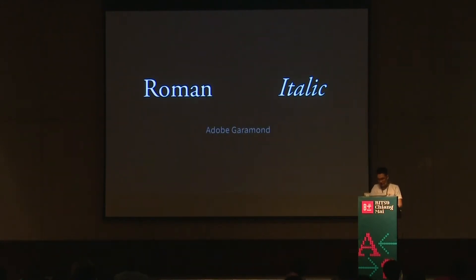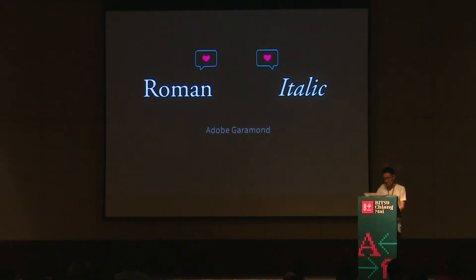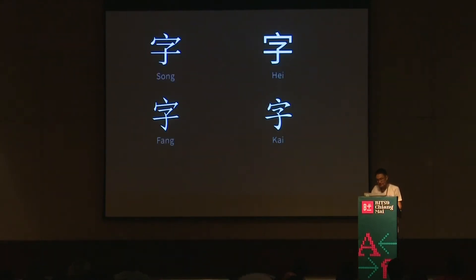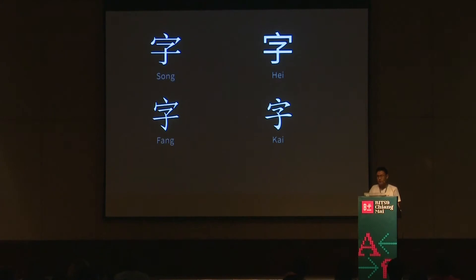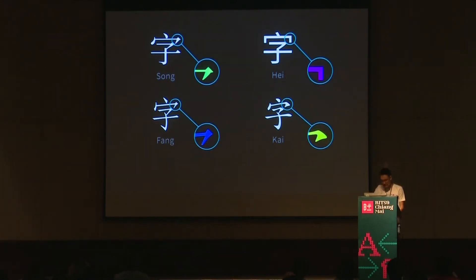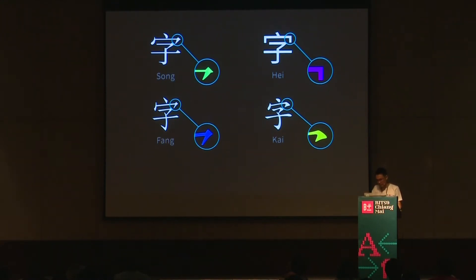We all know that in modern Latin typography, Roman and italic make a sweet couple — so sweet that they usually appear built-in in one typeface. Such companionship can't be found in Chinese yet. What we have in Chinese today is four brothers who don't really talk to each other: Song, Hei, Fang, and Kai, each representing a visually separate style. When I said they don't talk to each other, I mean they are not interdependent — each works by itself. You can't find any of these brothers bundled up in a single font.